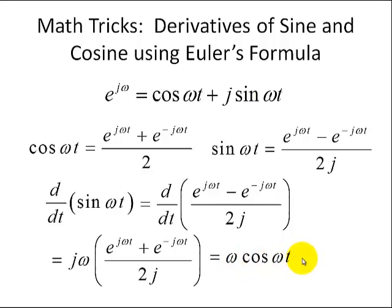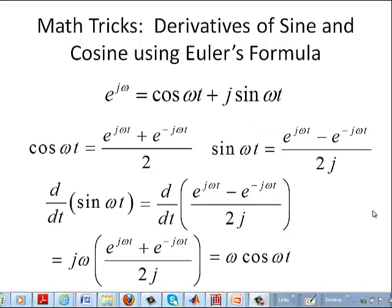So hopefully these two examples provide you more confidence in using Euler's formula, as well as help you remember where the negative sign goes when you take the derivative of sine and cosine. This is just one example of using Euler's formula, and I'll have another video dealing with trig identities. Thanks for watching. Signing off, Dr. J.